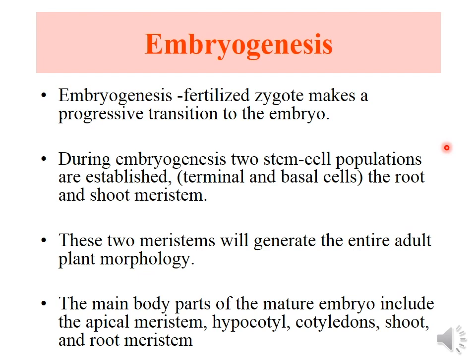The zygote produced after fertilization must undergo various cellular divisions and differentiation to become a mature embryo. An end-stage embryo has five major components including shoot apical meristem, hypocotyl, root meristem, root caps, and cotyledons.